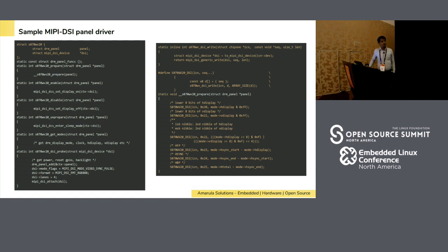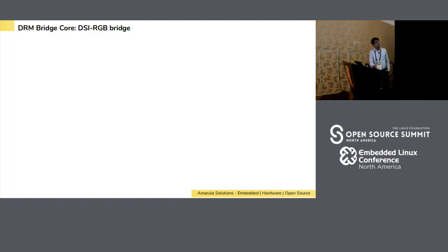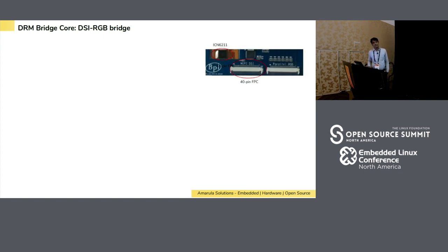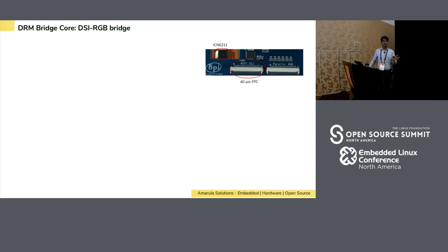That is how the panel driver looks like. We also have a bridge driver. I can use the same panel with a DSI-to-RGB bridge. The ICN6211 is a bridge controller from Chipone. The bridge converts DSI packets to RGB, so end users can reuse the RGB output on their boards. We write a bridge driver that interacts with DRM, and a simple RGB panel driver, and both interact to convert DSI to RGB packets.